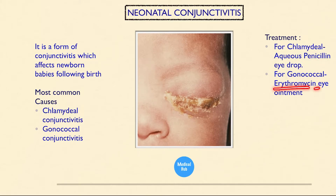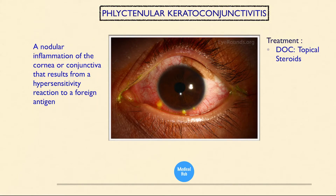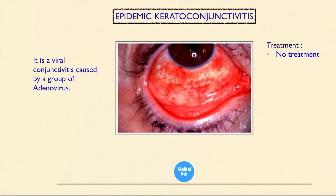The most common causes of neonatal conjunctivitis are chlamydial and gonococcal conjunctivitis. Treatment for chlamydial is aqueous penicillin eye drop; for gonococcal is erythromycin eye ointment. Next is phlyctenular conjunctivitis — a nodular inflammation of the cornea or conjunctiva resulting from a hypersensitivity reaction to a foreign antigen. Drug of choice: topical steroids.